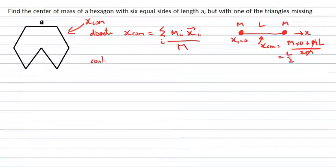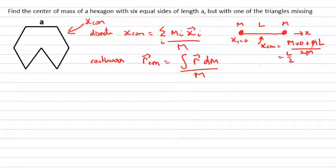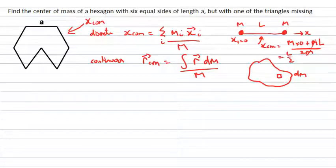Or we could have a continuous mass distribution. In this case, the center of mass coordinate — which may have x, y, or z components — is given by the integral of the position coordinates of each element dm, divided by the total mass of the system. That's when you've got some blob of matter and you care about summing over little elements dm.